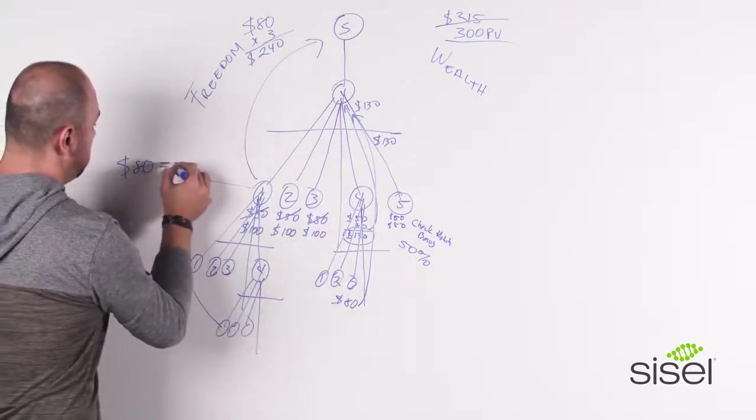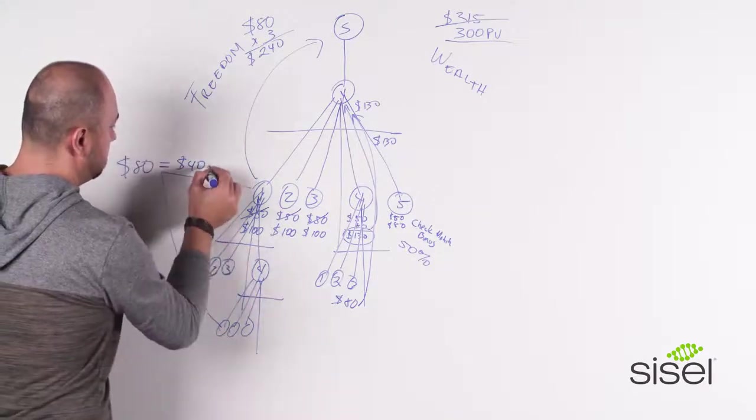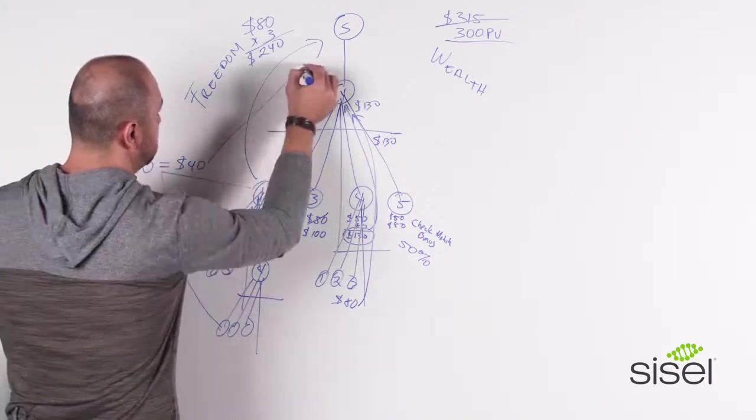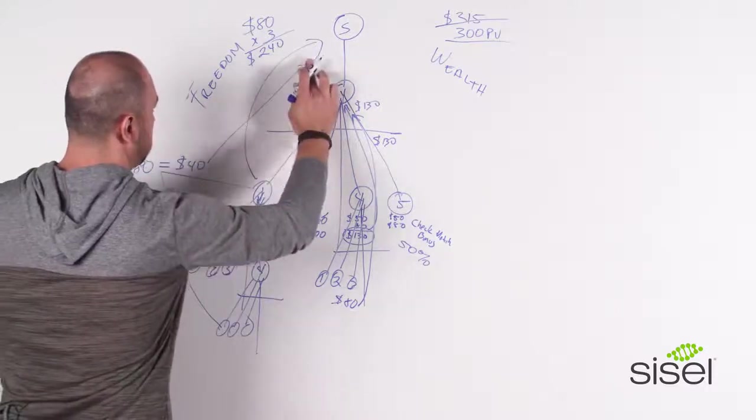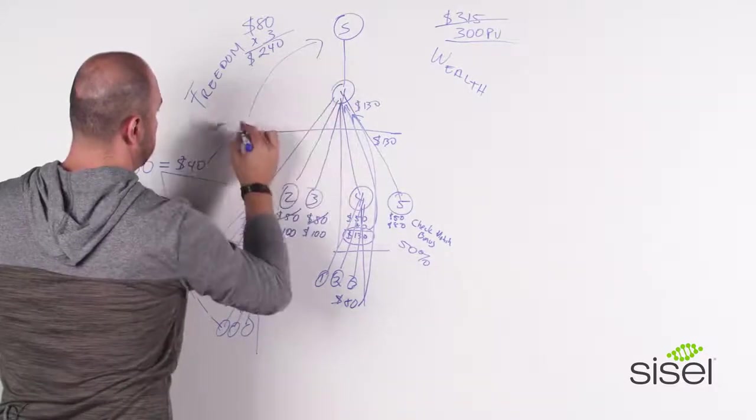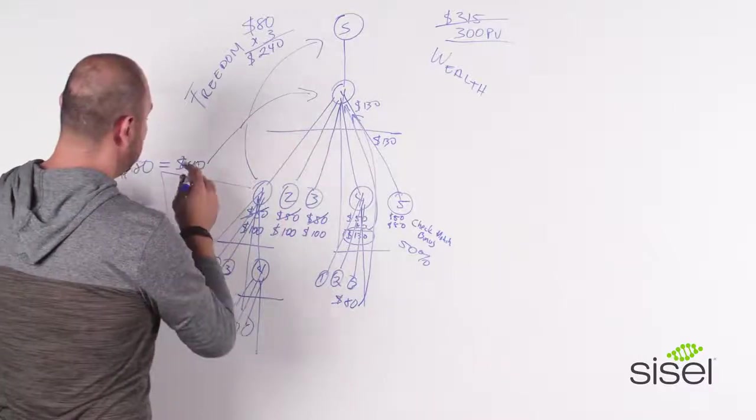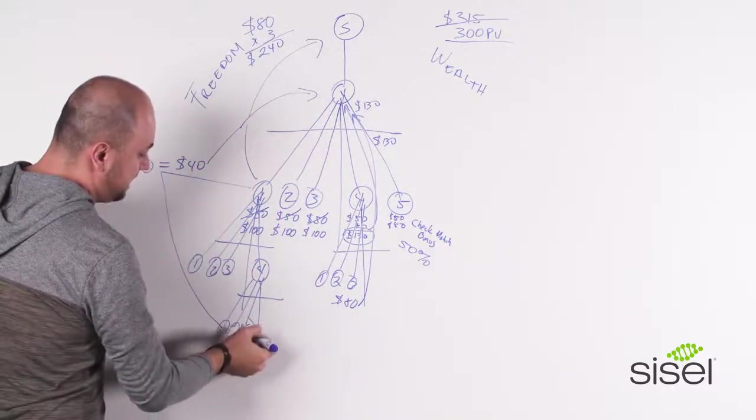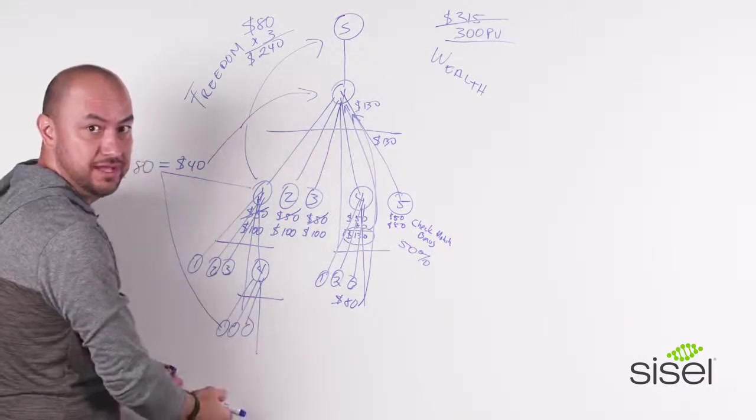So you will get $40 per person that goes directly to you. So you'll be generating anything that they do also through infinity.